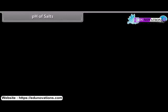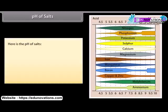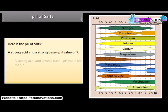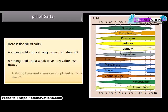pH of salts: A strong acid and a strong base produce a salt with a pH value of 7. A strong acid and a weak base produce a salt with a pH value less than 7. A strong base and a weak acid produce a salt with a pH value more than 7.